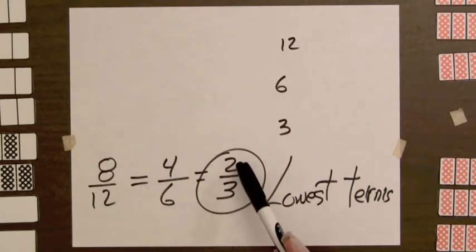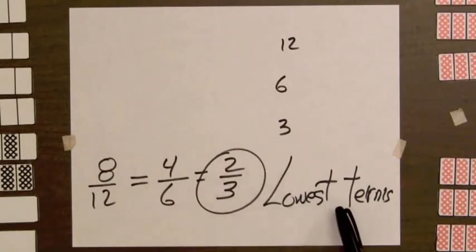But the only whole number that divides into both two and three is one. So the fraction two-thirds is in lowest terms.